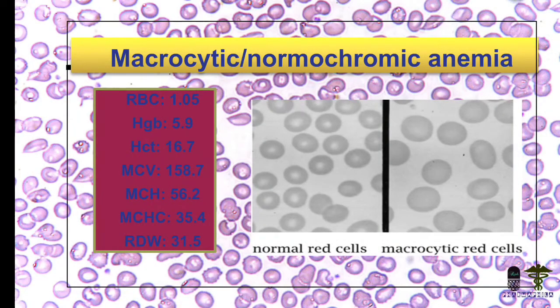This is microcytic normochromic anemia. Normochromic means the MCHC is 35.4, which lies in the normal range. Microcytic means one parameter — MCV — is outside the normal range. It is called anemia because of the decreased level of HB in the picture.